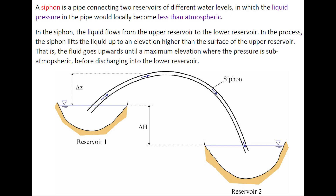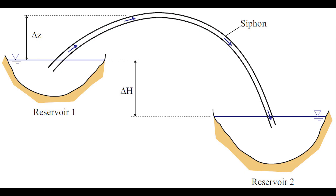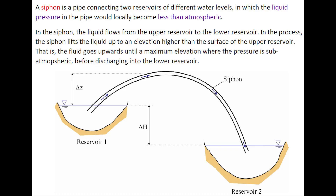A siphon is a pipe connecting two reservoirs at different water elevations, in which the liquid pressure in the pipe would locally become less than atmospheric. In the siphon, the liquid flows from the upper reservoir to the lower reservoir.